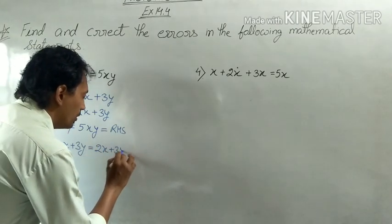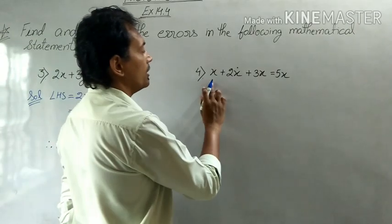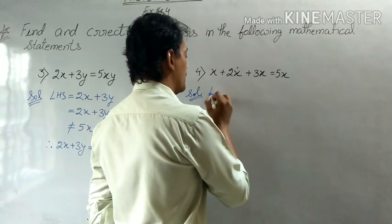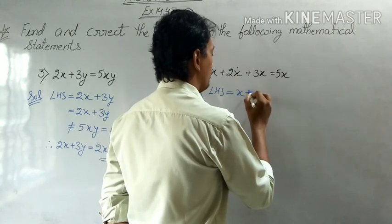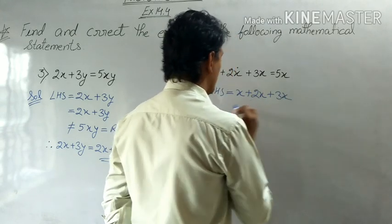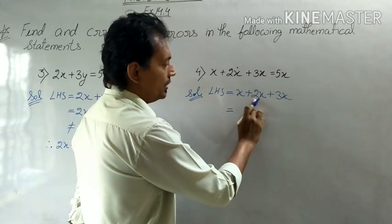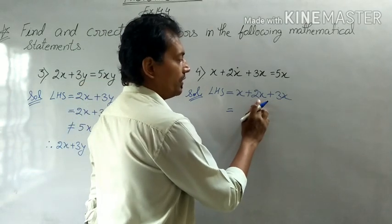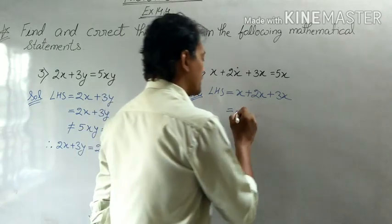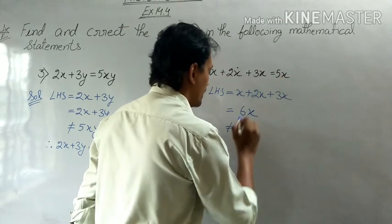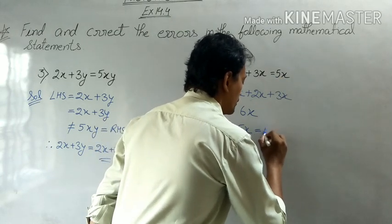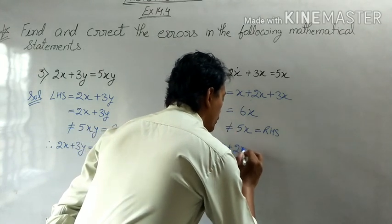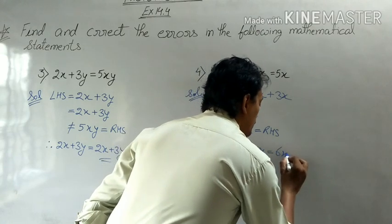The correct statement should use like terms. For example, x plus 2x plus 3x — all three terms are like terms and can be added together. So x plus 2x plus 3x equals 6x. The correct statement is: x plus 2x plus 3x = 6x.